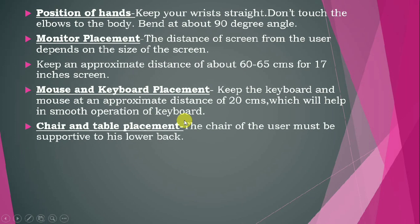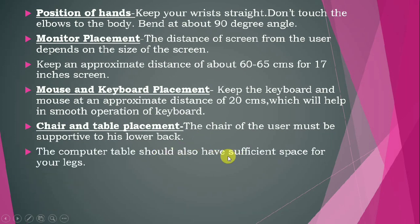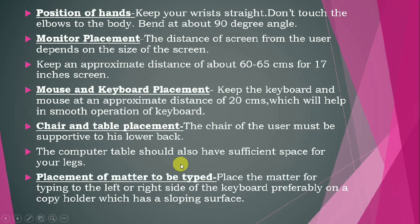For chair and table placement, the chair must be supportive to the user's lower back — it should not be so hard that after working for some time there is pain in your back. The table should also have sufficient space for your legs. Whatever material you have to type should be placed to the left or right side of the keyboard, and if preferred it can be placed on a copy folder or on a cardboard with a sloping surface.